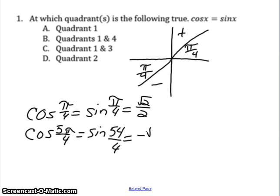Which is equal to negative square root of 2 over 2, because those values are both in quadrant 3 and sine and cosine are negative in quadrant 3. So there are two angles, one in quadrant 1 and one in quadrant 3, where sine of x is equal to the cosine of x.